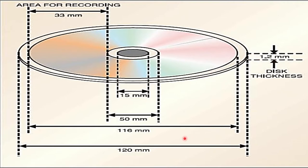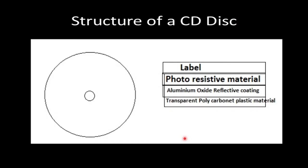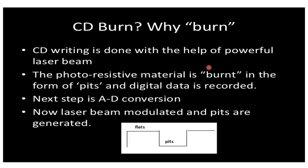Moving further to the structure of the CD disc: you have a label, a photoresistive material, an aluminum oxide reflective coating, and inside that there is a transparent polycarbonate plastic material. So this is the first layer, then the second layer, then the third layer, and the fourth layer.